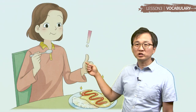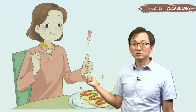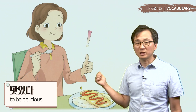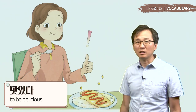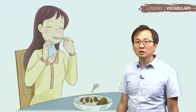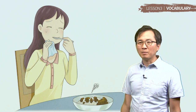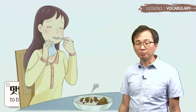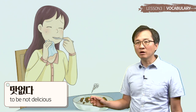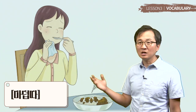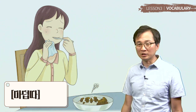It seems like she likes this food. Delicious 뭐예요? 그럼 맛있다. 맛있어요. It seems like it doesn't taste good. 그러면 맛없어요. 맛없다. So pronunciation is a little tricky. For delicious: 맛있다. But for not tasty: 맛없다.